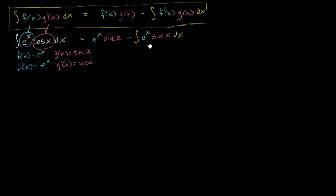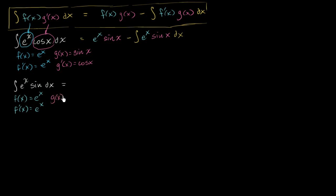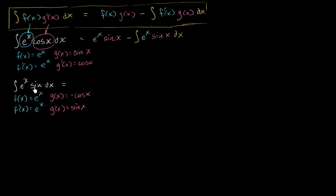So let's find the antiderivative of eˣ sin(x) dx. Similarly, we set f(x) = eˣ, so f'(x) = eˣ. And we set g'(x) = sin(x), which means g(x) — the antiderivative of sin(x) — is negative cos(x), because the derivative of cos(x) is negative sin(x), and the derivative of negative cos(x) is positive sin(x). So let's apply integration by parts again.